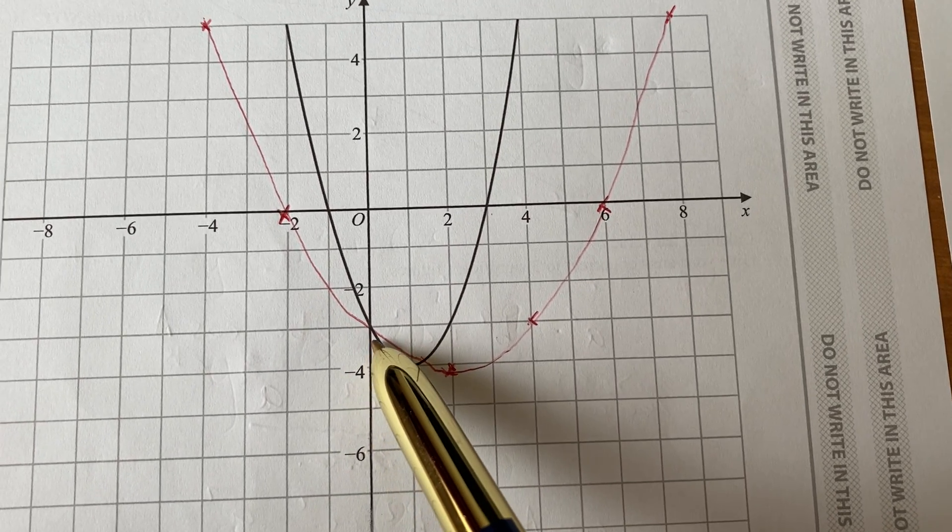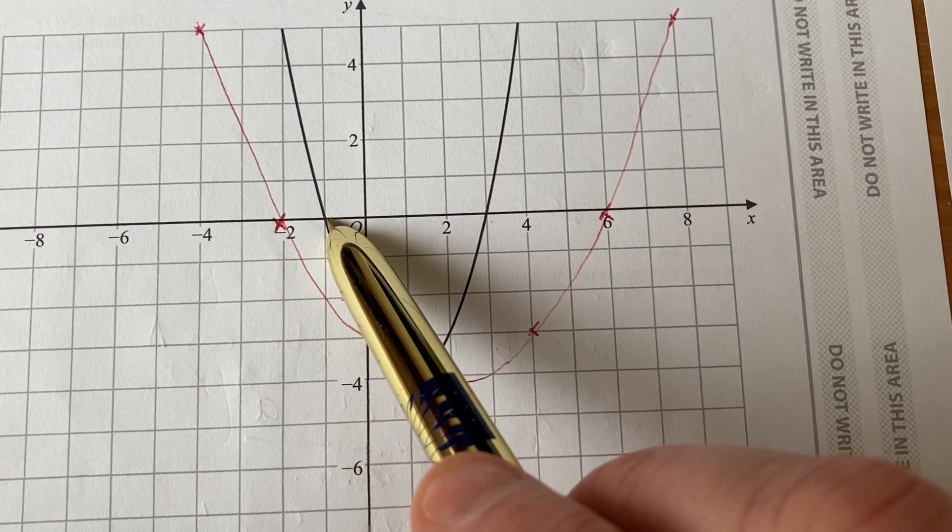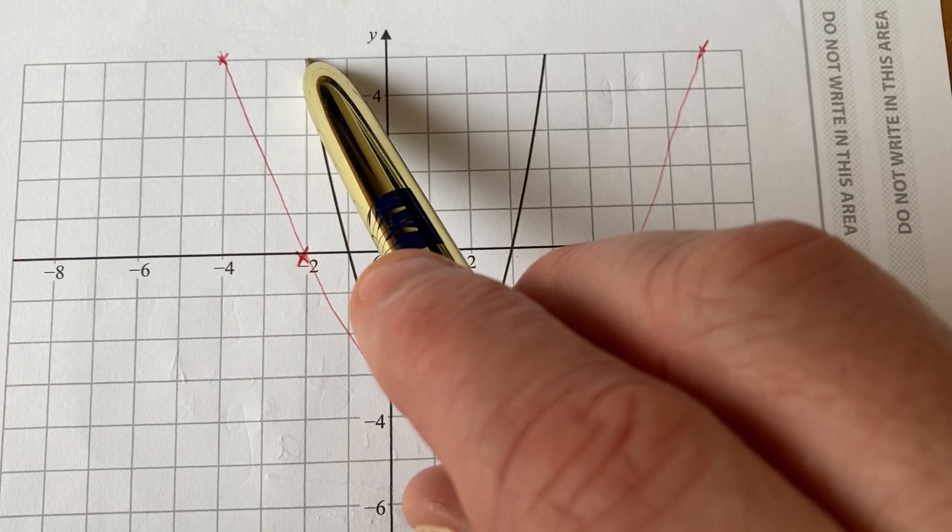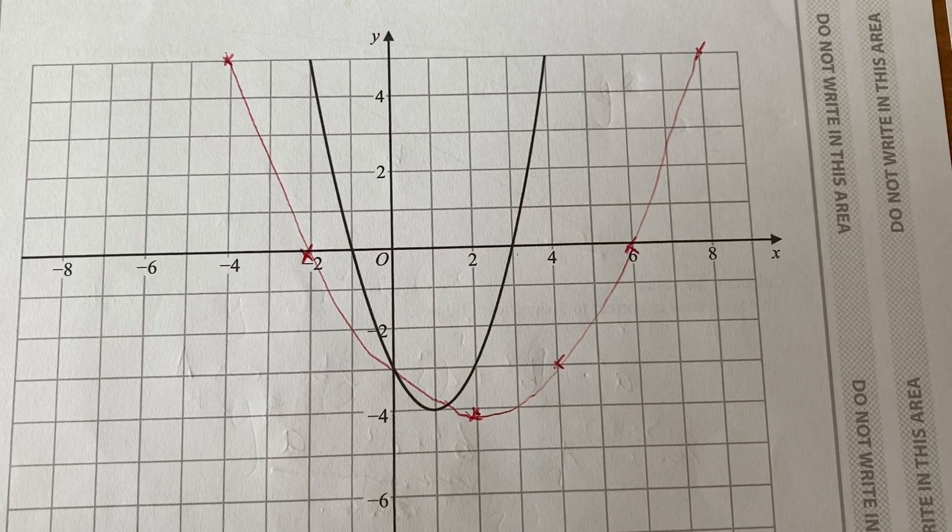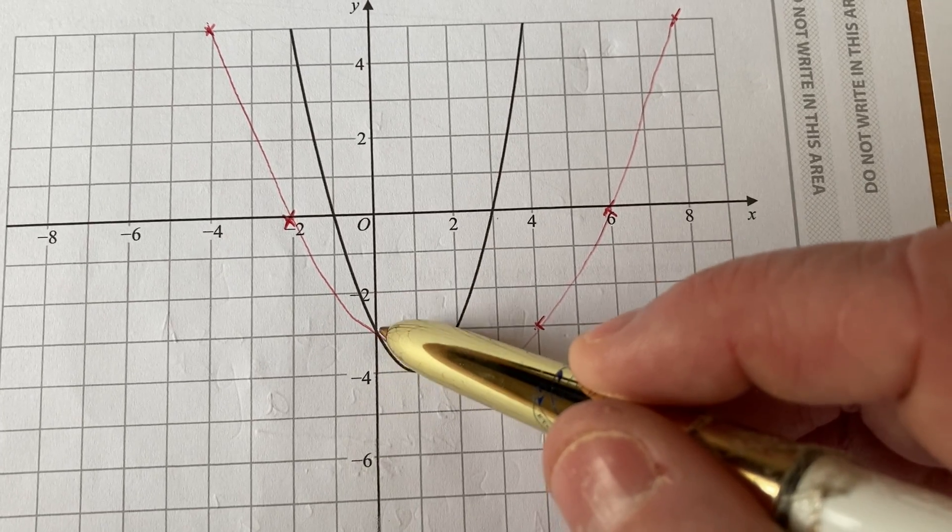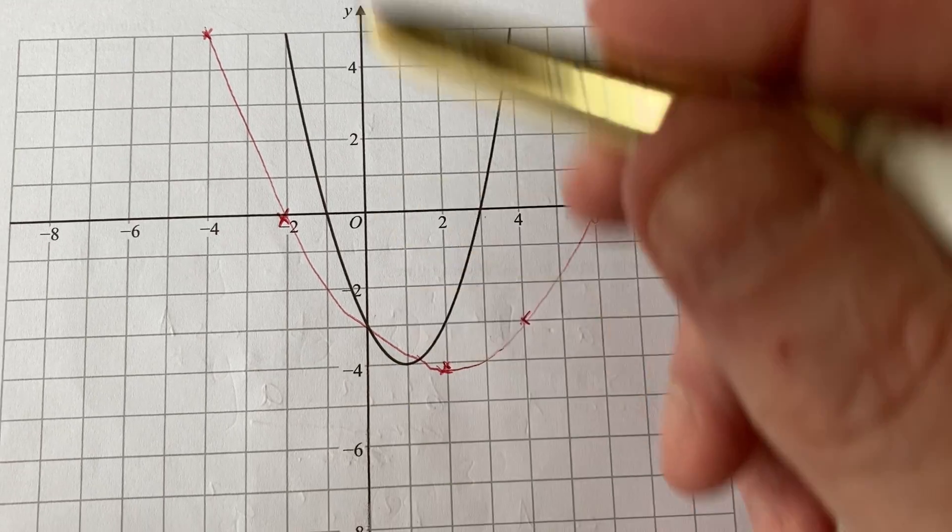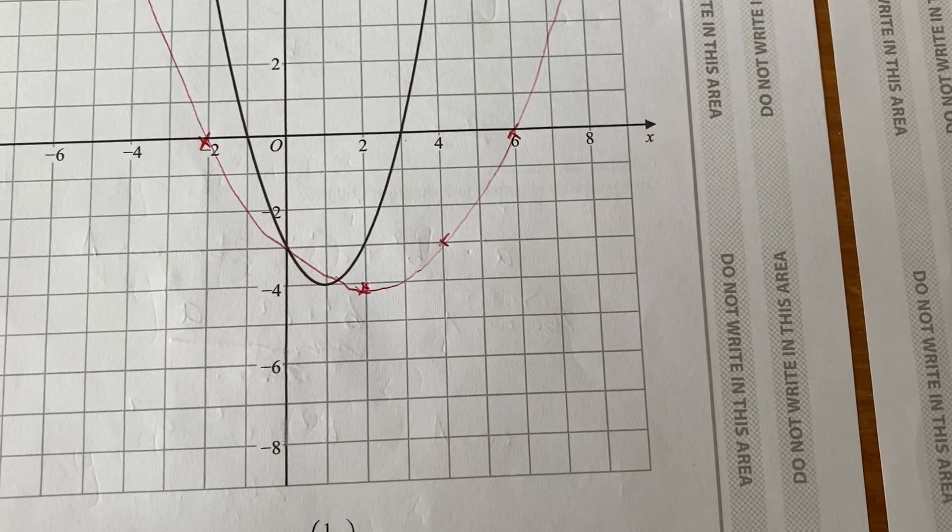Same on the left-hand side. So the one here that is 1 away becomes 2 away. The one at the top here that is 2 away becomes 4 away from the y-axis. Anything that is on the y-axis stays where it is, so that point's going to stay fixed. Nice red curve for part A.